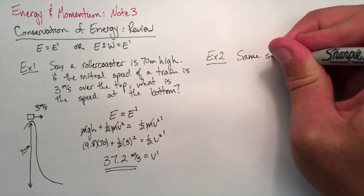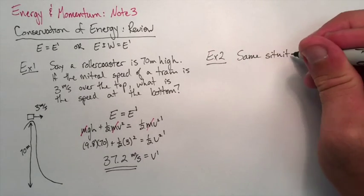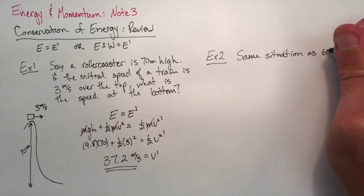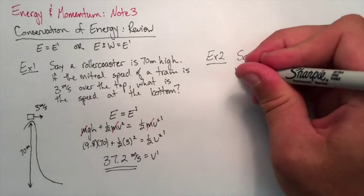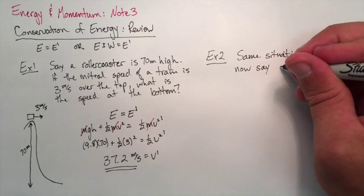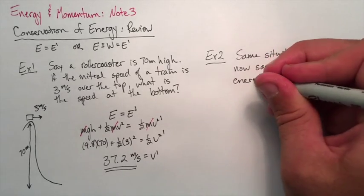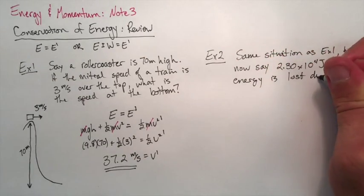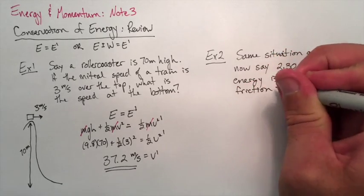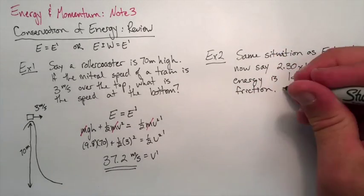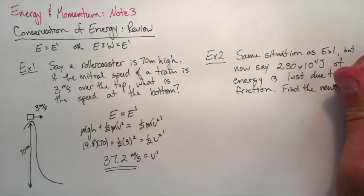In our second example, we're going to modify that first example. But we're going to use the same situation but let's say 2.3 times 10 to the 4 joules of energy is lost as that car goes down that ramp. So it could be lost due to friction on the ramp or it could be lost due to wind resistance. Let's factor that into our calculation and find our new speed.